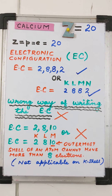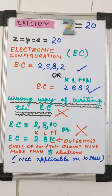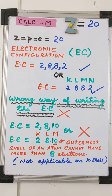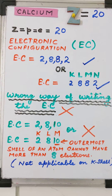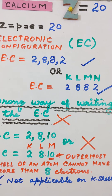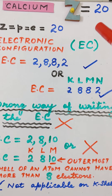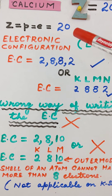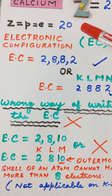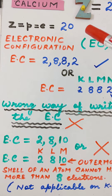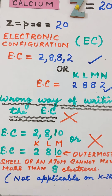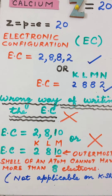Let us try to understand the electronic configuration of the 20th element, that is calcium. Calcium has an atomic number Z of 20, and the number of electrons present in calcium are also 20. So based upon the number of electrons, let us try to understand the electronic configuration for calcium.